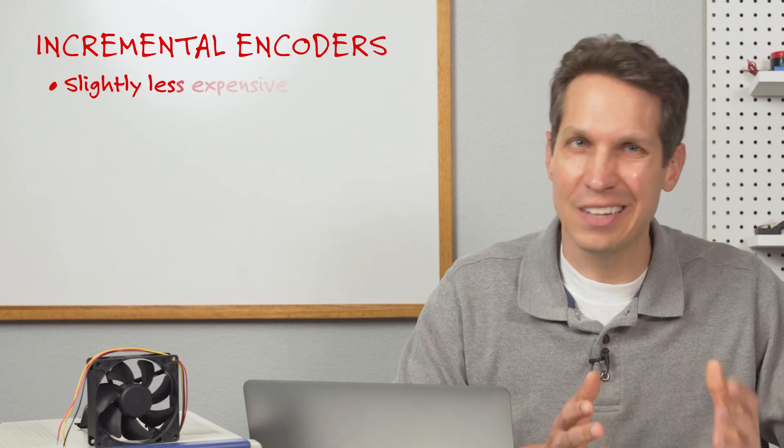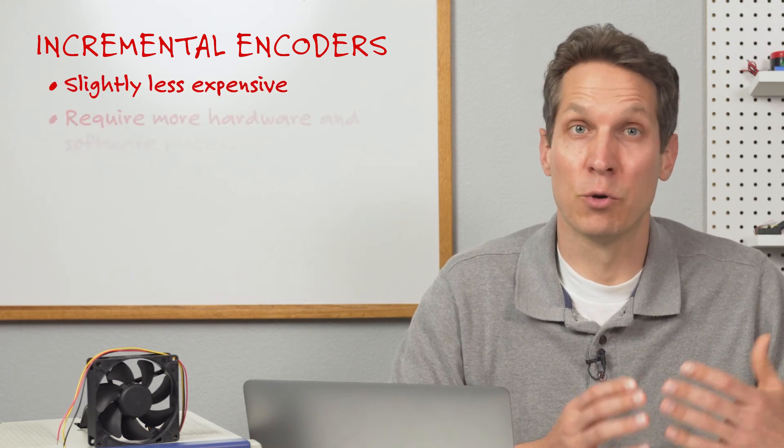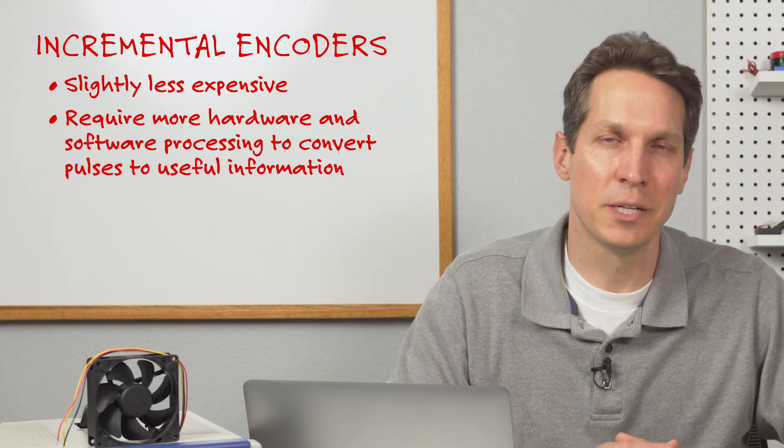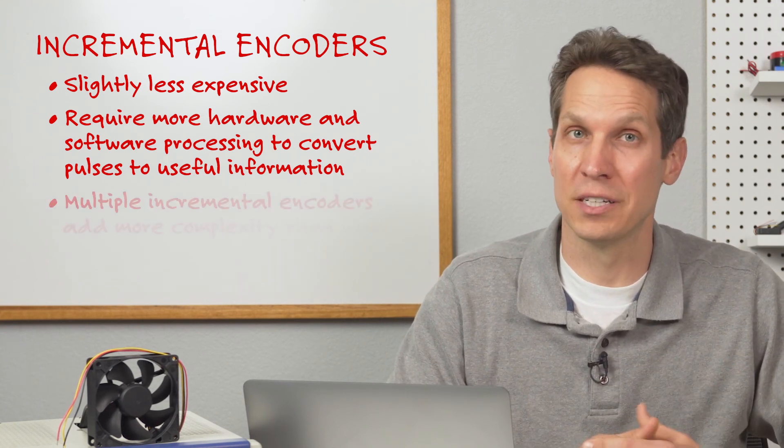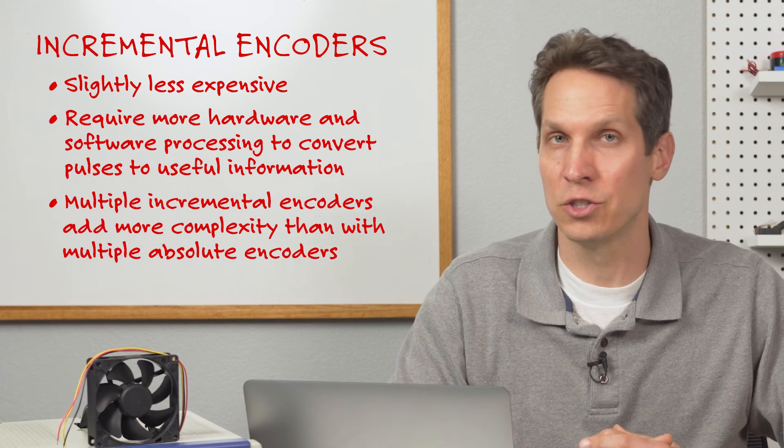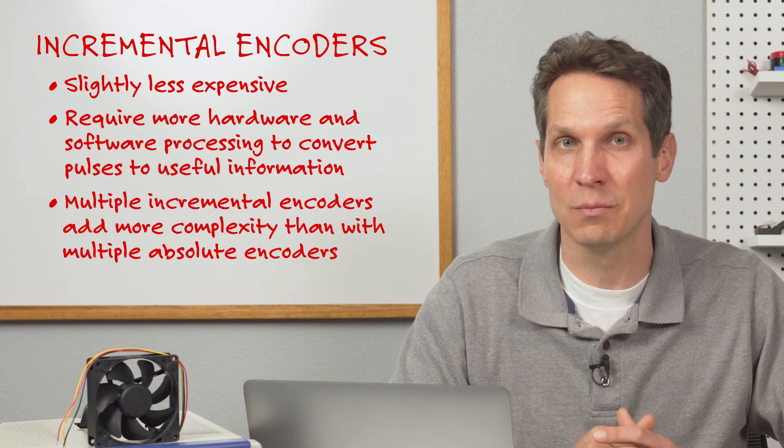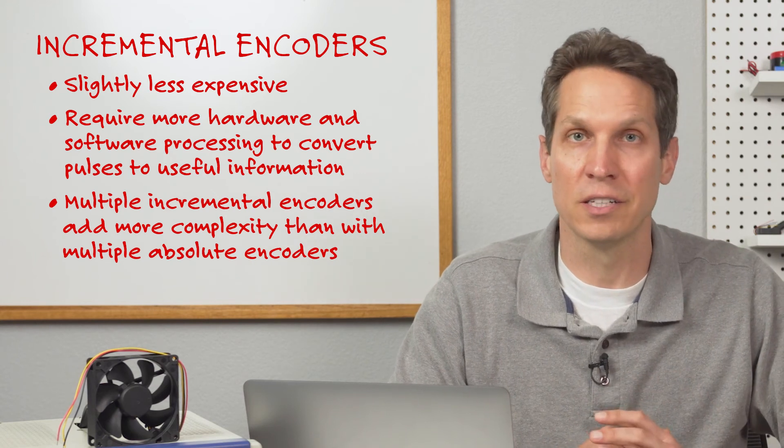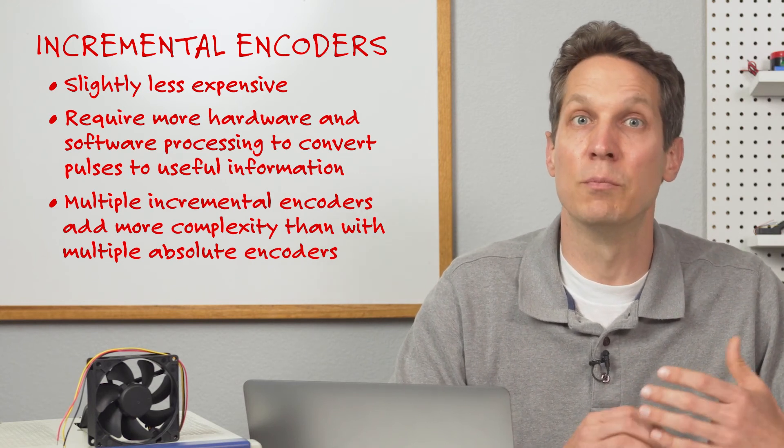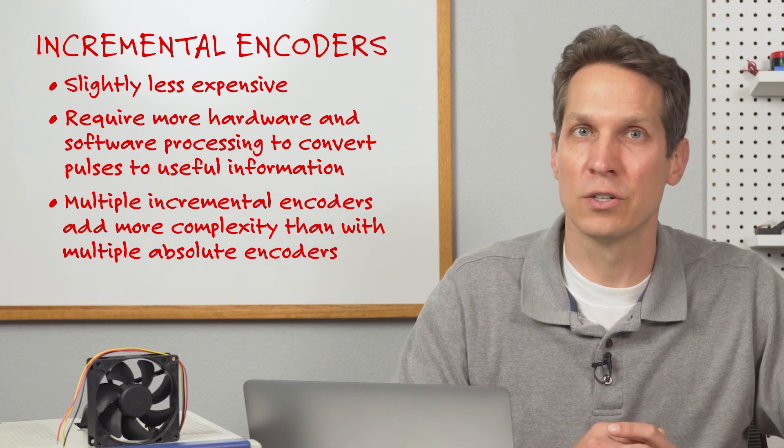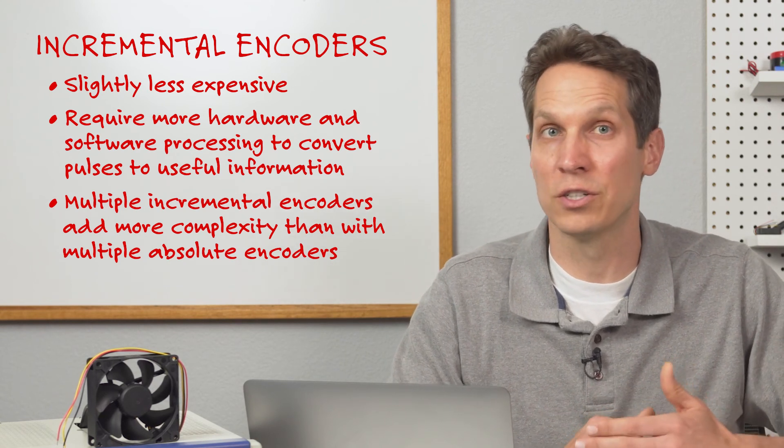While incremental encoders are slightly less expensive, they also require more hardware and software processing to convert the pulses to useful information. This adds even more complexity when you're using multiple encoders in conjunction with each other. It is much easier to combine multiple absolute encoders into the same system with their various serial bus interfaces than it is to put multiple incremental encoders in one system when each incremental encoder requires its own unique quadrature interface.